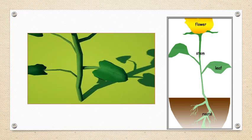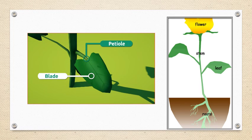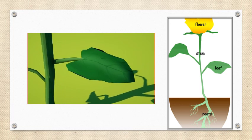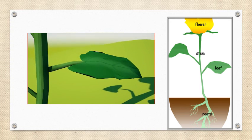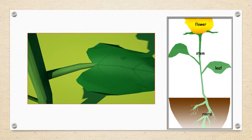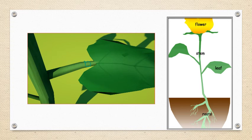Leaves are made up of two parts: the petiole and the blade. The blade is the flat part of the leaf, which has many green food-making cells. The petiole attaches the leaf blade to the stem.